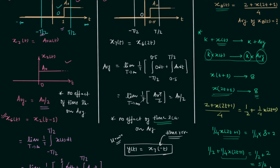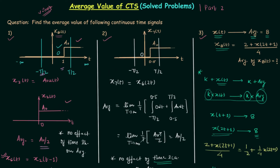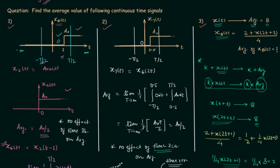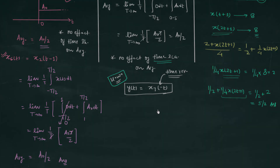Now adding the constant 1/2 to the signal (1/4)·x(2t + 1), which has average 2: we add 1/2 to the average, giving 2 + 1/2 = 5/2. So 5/2 is the answer to the third problem. I hope you now understand how to deal with average value calculations for non-periodic signals. Solve the homework problem and post your answer in the comment section.